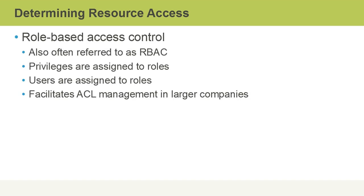Role-based access control is also often referred to as RBAC — so whenever you see RBAC, be careful to look at the context to ensure you know whether it's referring to rule-based or role-based access control. With role-based access control, privileges are assigned to roles. Users are then assigned to the roles and therefore inherit the permissions assigned to those roles. This facilitates access control list management in larger companies, because it's too difficult to manage individual resource permissions granted to individual user accounts on a large scale. In this video, we discussed how to determine resource access.